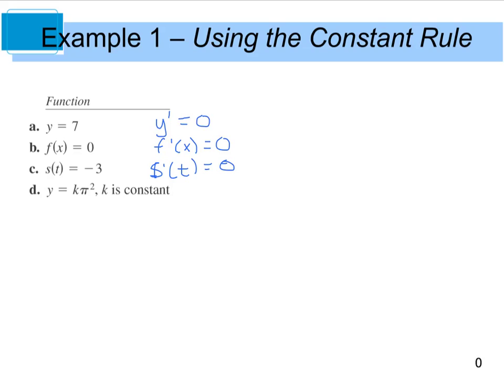And if we are given the function y equals k pi squared, and k is constant, we know that pi is also constant. So the derivative of a constant — y prime — is also equal to 0.